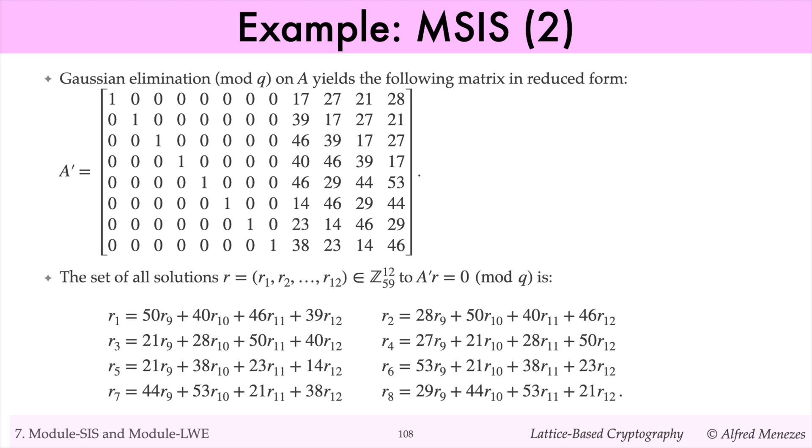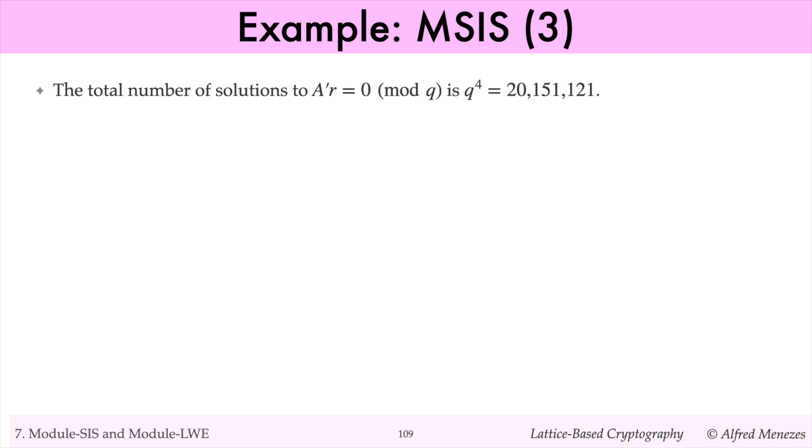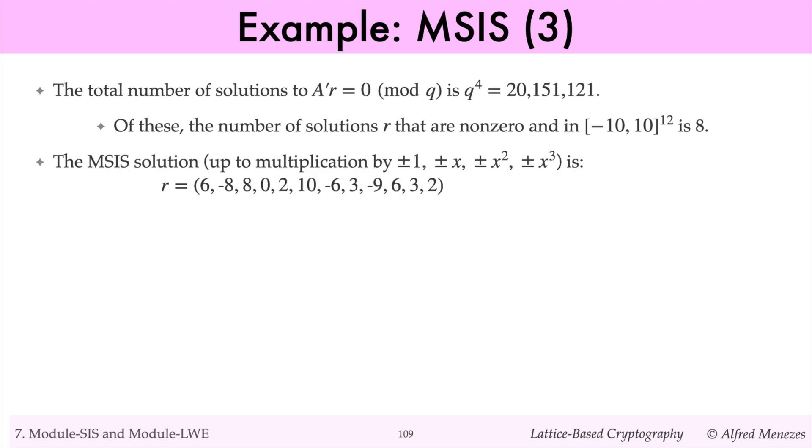The independent variables are R9, R10, R11, and R12, and the dependent variables are R1, R2, up to R8. The total number of solutions is q to the fourth, which is about 20 million. Of these, there are 8 nonzero solutions R, all of whose components are between minus 10 and 10. So up to multiplication by plus or minus 1, plus or minus x, plus or minus x squared, and plus or minus x cubed, this is the SIS solution.